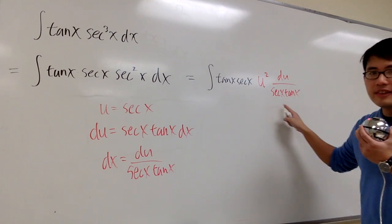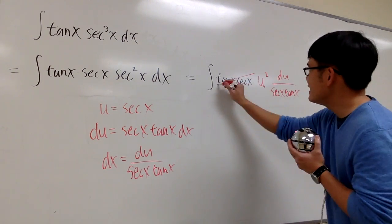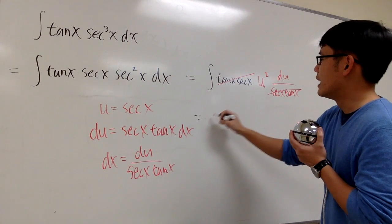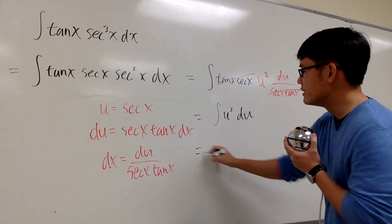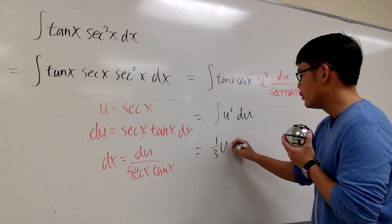And you see, this and that will cancel each other out, right? And now the question is just, how do you integrate u squared in the u world? Of course, this is going to be one-third u to the third power.